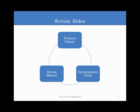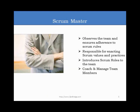In Scrum we have three roles: Product Owner, Scrum Master, and Development Team. The Scrum Framework talks about only these three roles, and these are the three roles which are committed to a Scrum project. The rest of the roles — other stakeholders and sponsors — are involved, but these three are the roles working for the delivery and success of the project.